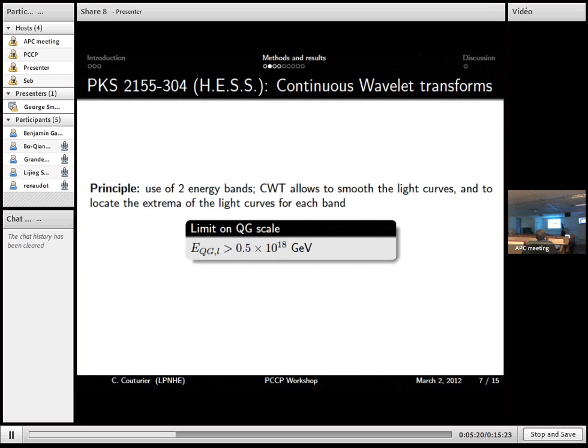But discrete wavelet transform can help us to smooth, to clean the light curve. And then continuous wavelet transform will be used to locate the peaks in, let's say, in two energy bands. And once we locate the peaks in the light curve, we can get delta T. We know the delta E of energy we got. And thus we can derive a limit on QG scale. So that's the limit derived with this method.